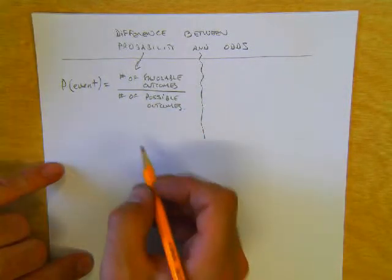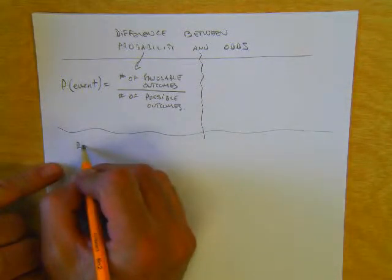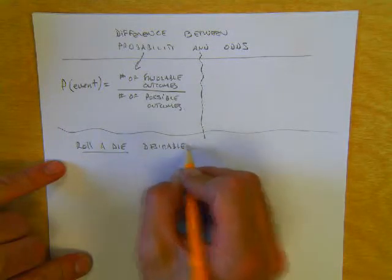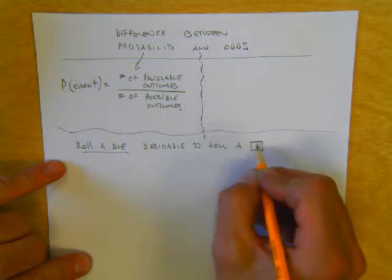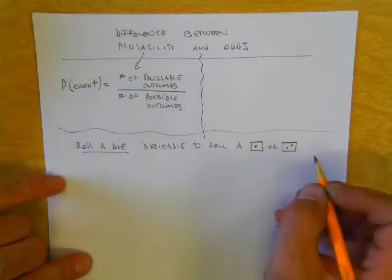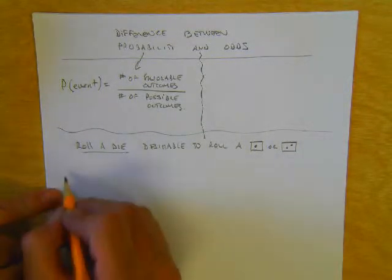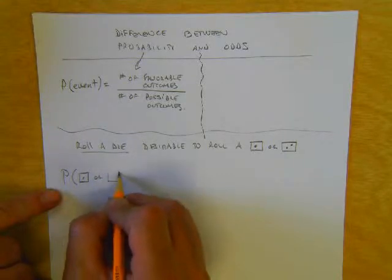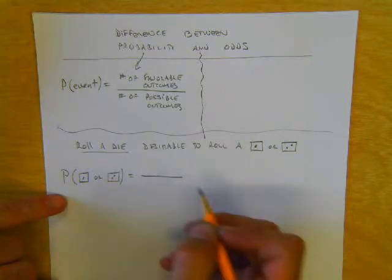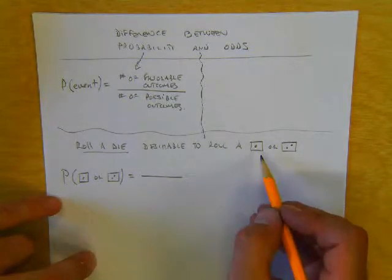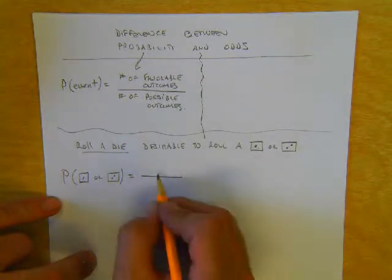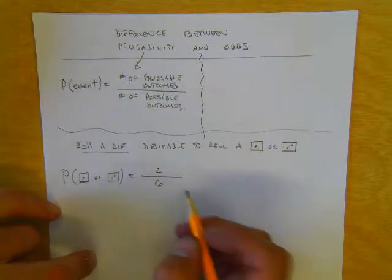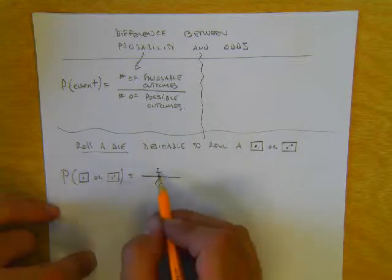The probability of an event occurring is equal to the number of favorable outcomes divided by the number of possible outcomes. For example, say we are going to roll a six-sided die and it is desirable to roll a one or a two. The probability of rolling a one or a two is equal to the number of favorable outcomes — the one or the two, so there are two of those — divided by the number of possible outcomes on a die, which are six. So the probability of rolling a one or two is two out of six.